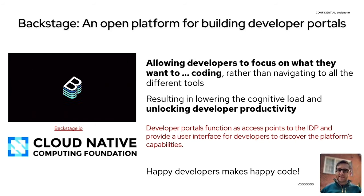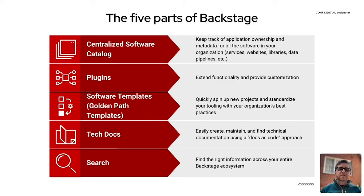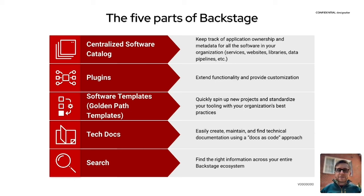So what is Backstage itself? It's made up of five key things. First, a centralized software catalog that keeps track of all application ownership, metadata, and everything else such as services, websites, libraries, and more. Second, plugins — which extend functionality and provide customization. They're a way to create a user interface into external or internal applications. For example, a plugin for GitHub lets you see issues related to an item in your software catalog.